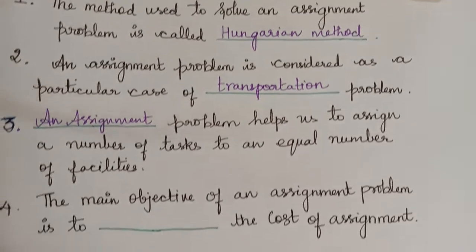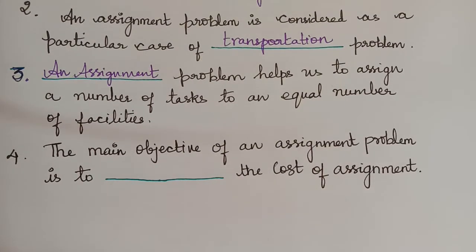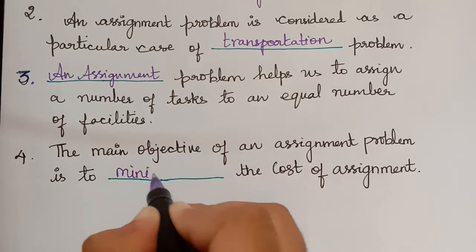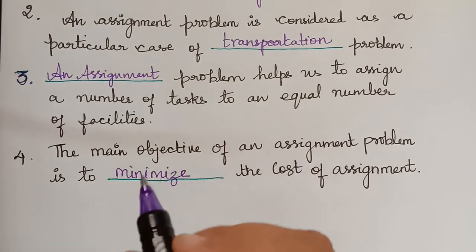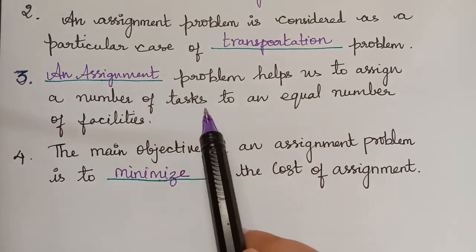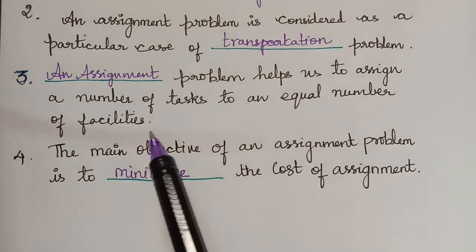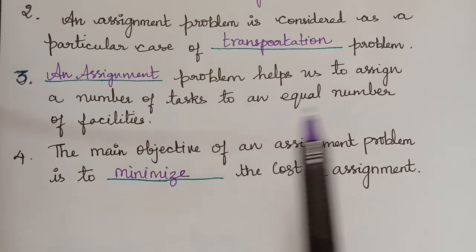The next question is: the main objective of an assignment problem is to minimize the cost of assignment. We know that in an assignment problem, we assign a number of tasks to an equal number of facilities, and very importantly, this has to be done at a minimum cost.